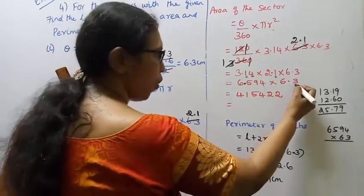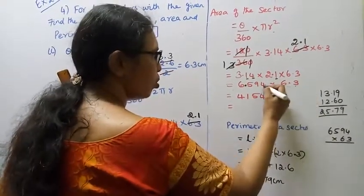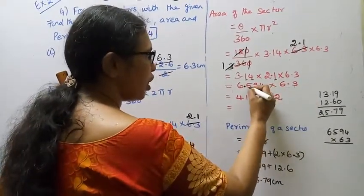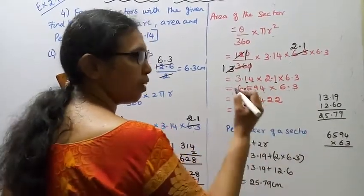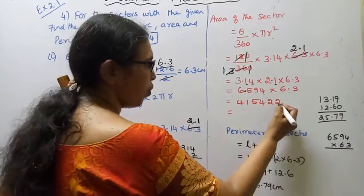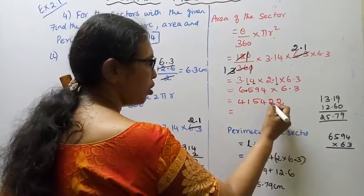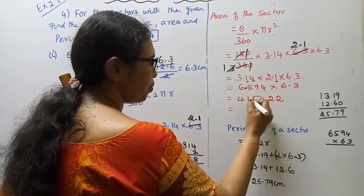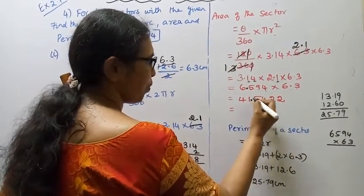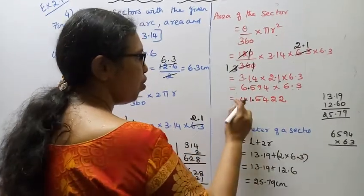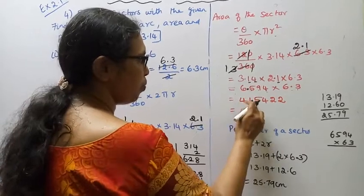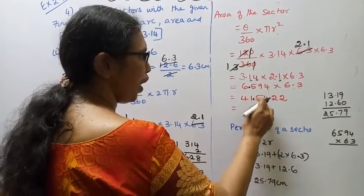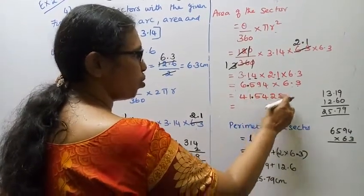After multiplication, we get 6.594. Placing the decimal: at the 4th decimal position, giving 41.5422. Rounding appropriately to two decimal places gives the area result.